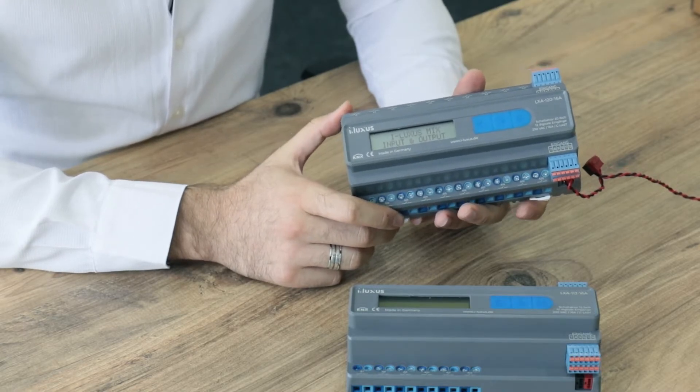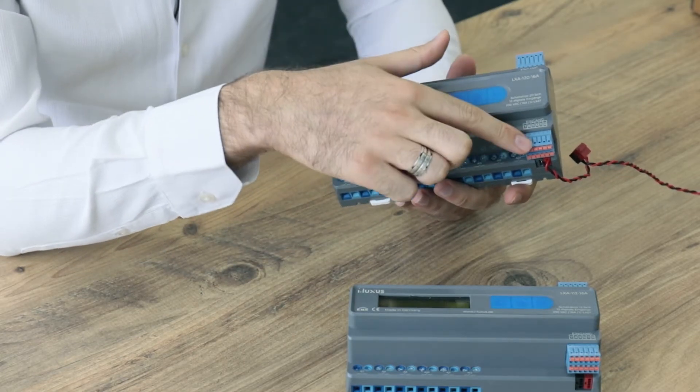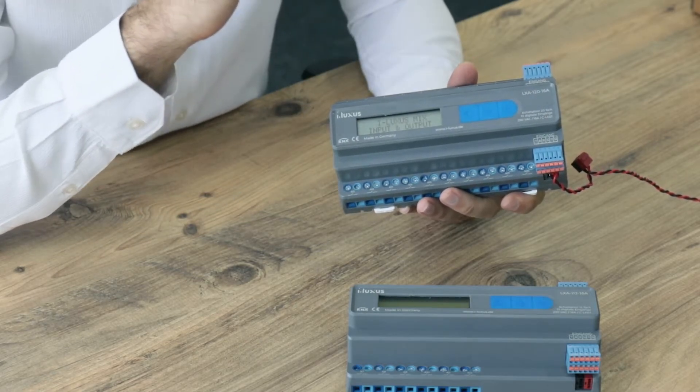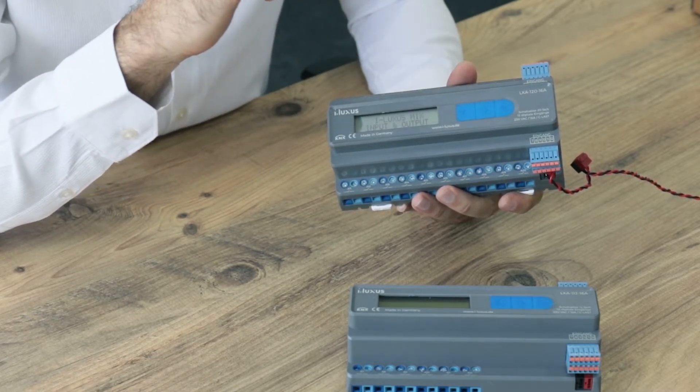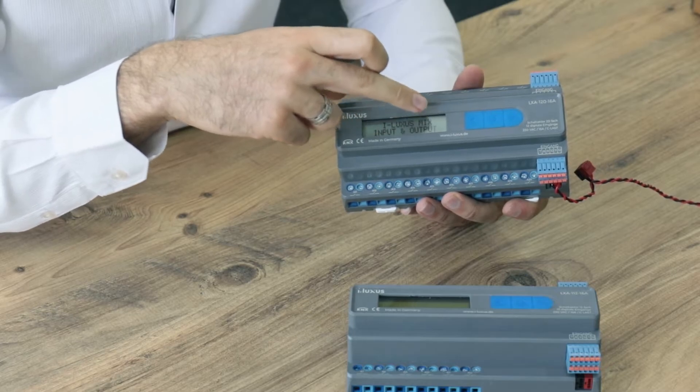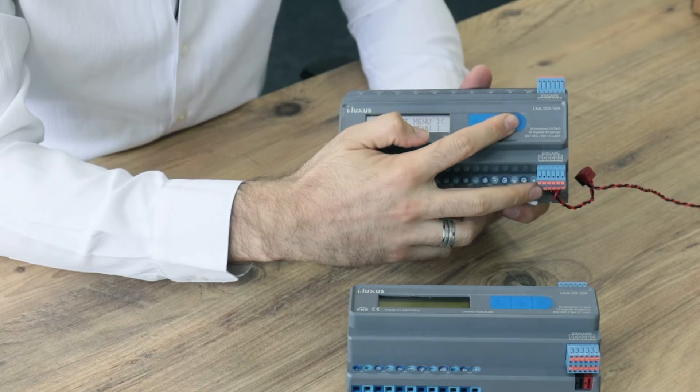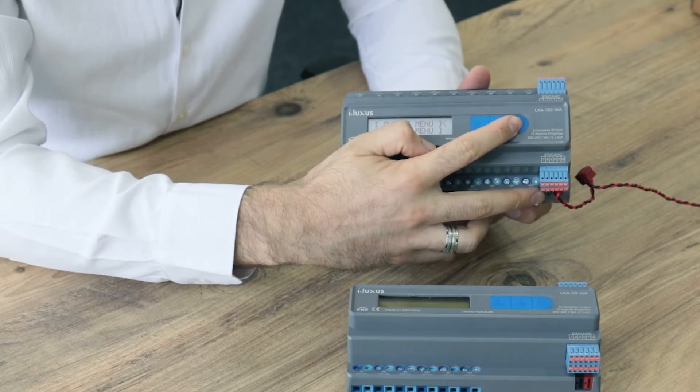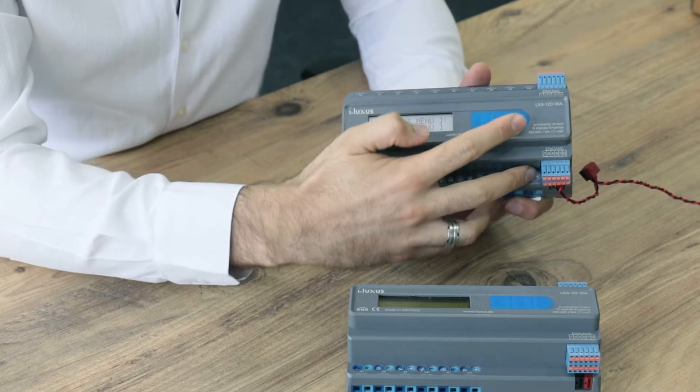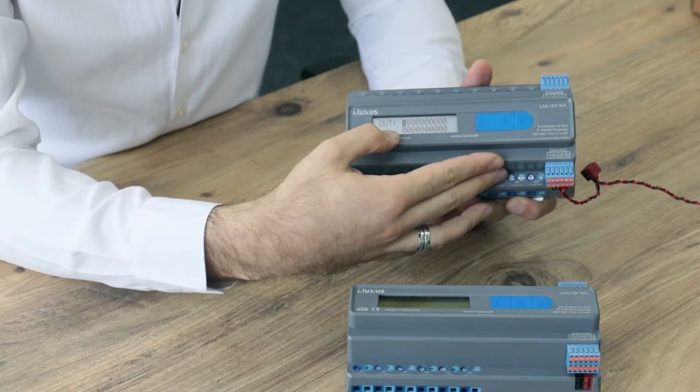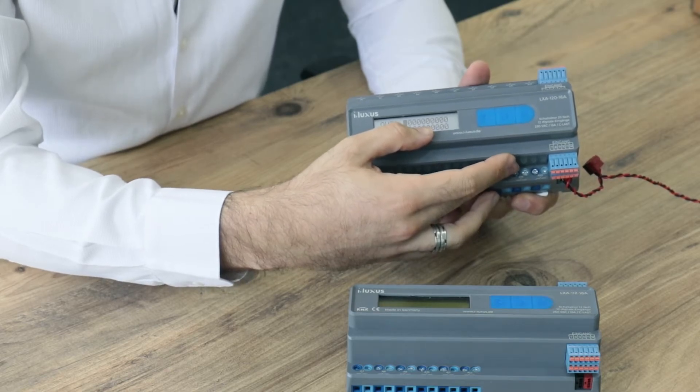In our actuator, we have some unique features. We have 12 digital inputs, as you see here, and you can connect your conventional switches, sockets, or sensors to the digital inputs directly. We have an LCD screen here with manual buttons. With this LCD screen, you can easily follow your output status or input status. You can also control your outputs manually with the manual buttons and LCD screen. Thank you very much.